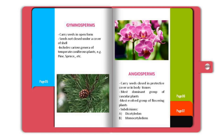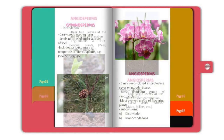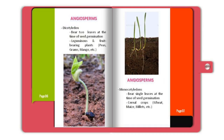Angiosperms carry seeds closed in a protective cover or in body tissues. They are the most dominant group of vascular plants and the most evolved group of flowering plants. Angiosperms can further be subdivided into dicotyledons and monocotyledons. Dicotyledons are those that bear two leaves at the time of seed germination. These include leguminous plants and fruit-bearing plants such as peas, grams, mango, etc.